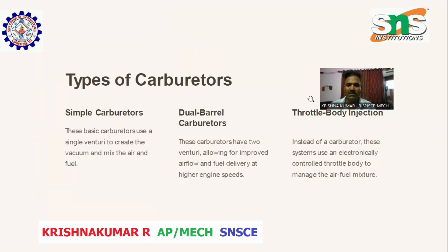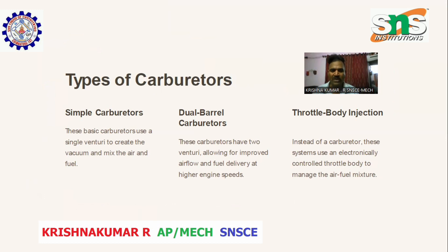Types of carburetors. Simple carburetors: These basic carburetors use a single venturi to create the vacuum and mix the air and fuel. Dual barrel carburetors: These carburetors have two venturis, allowing for improved air flow and fuel delivery at higher engine speeds.